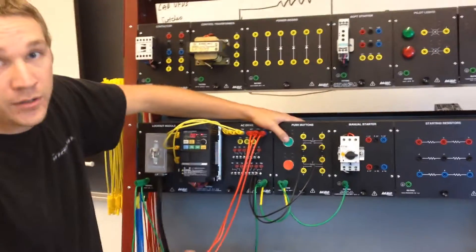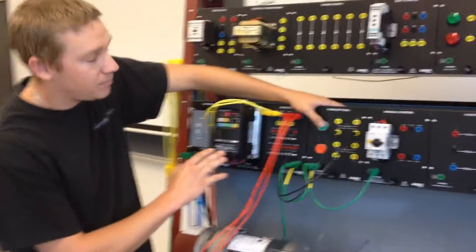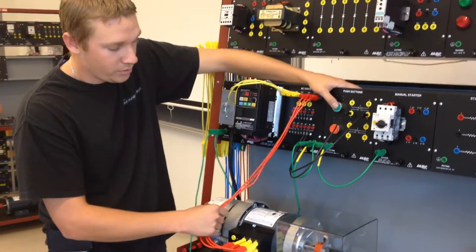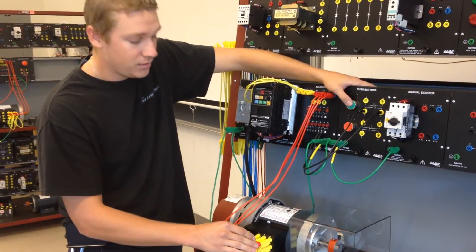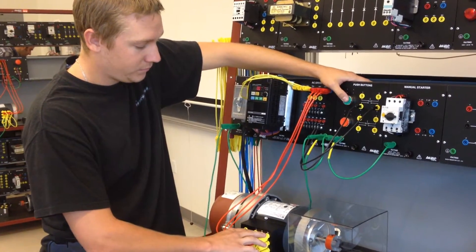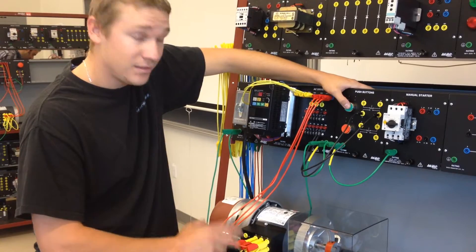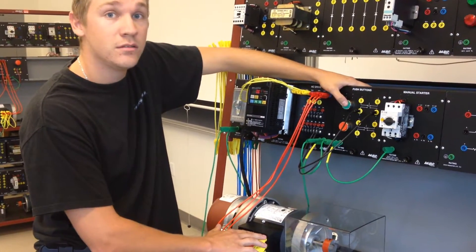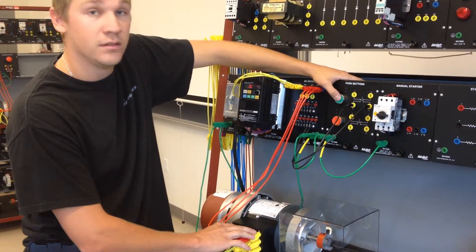When we push this push button, it will cut the AC power from the VFD going into the motor and supply DC voltage to the AC motor. This is a three phase motor. It supplies DC voltage to two of the three phases, and then on the other phase it's a negative to ground.